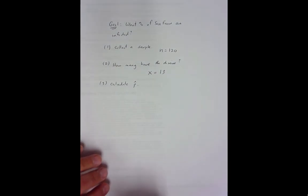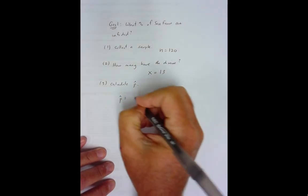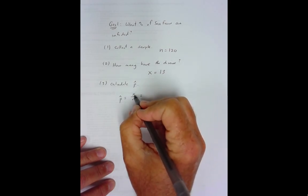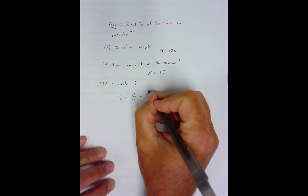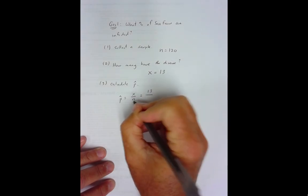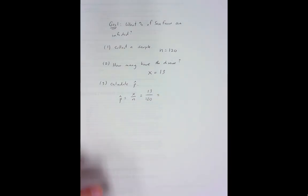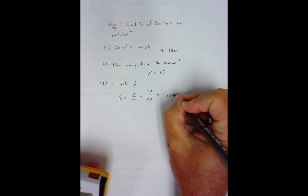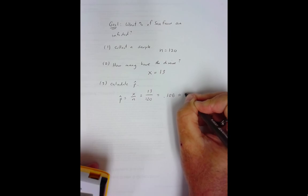Calculate p-hat. Well, guys, p-hat is X over N. It's the number out of the whole that has what we're measuring. In this case, it's 13 sea fans. N is 120. Now, I can if I want. Let me grab my calculator. I can if I want. So, I have what? 13 divided by 120. So, I have 0.108. So, that's approximately 10.8%.